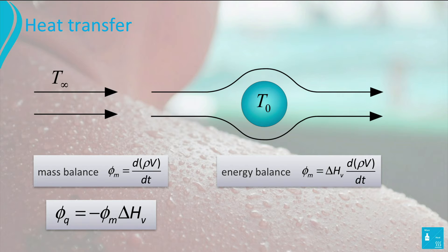The heat necessary for evaporation is delivered by the air. This means that heat is transferred from the air to the droplet. This can be described by the following relationship, where h is the heat transfer coefficient, A is the surface area of the droplet, T_∞ is the temperature of the air, and T_0 is the wet-bulb temperature of the water droplet.